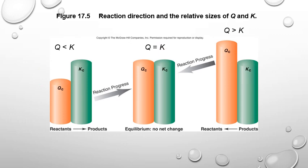Here is a visual description of these concepts. If Q equals K, the system is already at equilibrium — the two bar heights are the same, so no net change occurs. On the left diagram where Q is less than K, the numerator must increase, so the reaction shifts from reactants to products. On the right diagram where Q is greater than K, too many product molecules cause the reaction to shift from products to reactants.